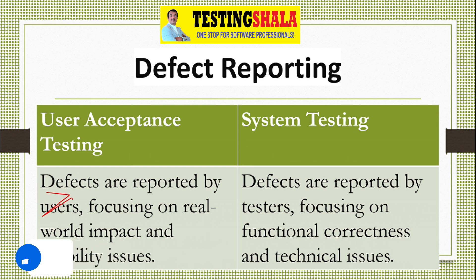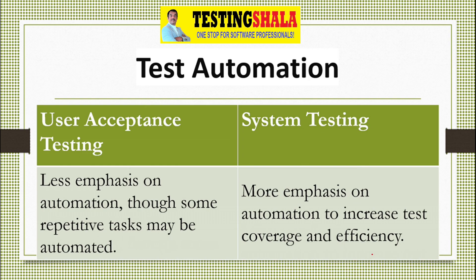The next key difference is defect reporting. In user acceptance testing, defects are reported by the end user, focusing on real-world impact and usability. During system testing, we focus on functional correctness as well as technical issues.